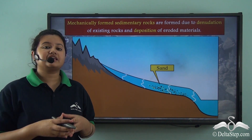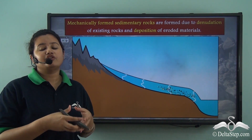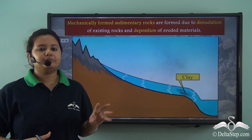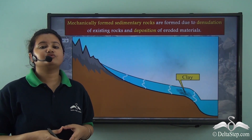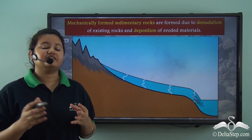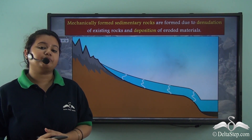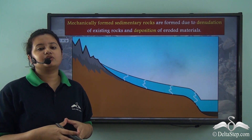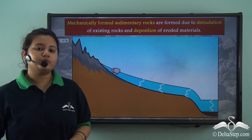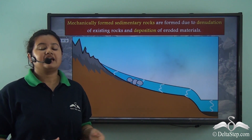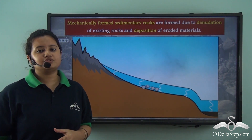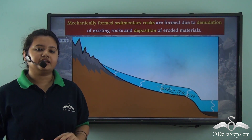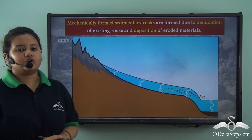The size of gravels keeps on decreasing due to friction and they can become as small as sand particles, and further due to erosion and friction, their size reduces and they become as tiny as clay particles. All these eroded materials are then transported to the river beds and due to constant deposition of sediments layer over layer, these sediments get hardened to form sedimentary rocks.